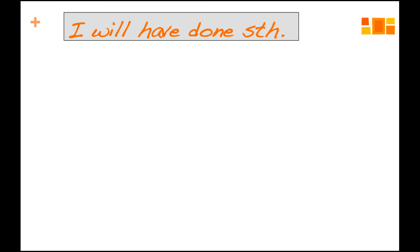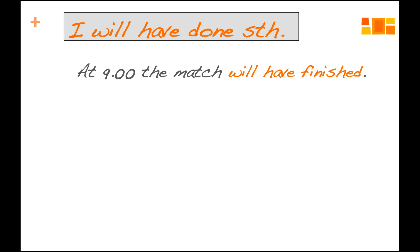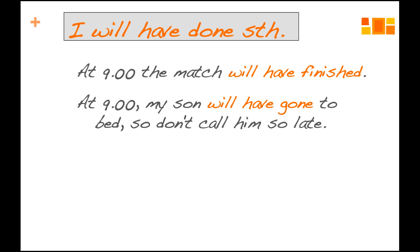So much for 'I will be doing' — the future continuous. Now we've got 'I will have done something.' Like: 'At nine o'clock, the match will have finished.' This is different from the 'will be doing,' obviously. At nine o'clock, your mom says: 'My son will have gone to bed, so don't call him so late.'